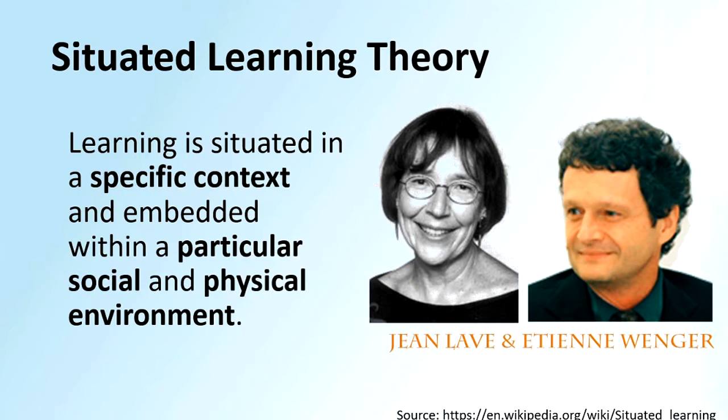For example, the same concept presented to learners in North India has a different situational context, and the same concept presented in the Southern part of India will have a different situational context. The idea of community of practice reflects that whenever people are practicing a particular behavior in a given situation, if learners are placed in that situation or a similar situation is created in the classroom artificially, then learners will learn better.